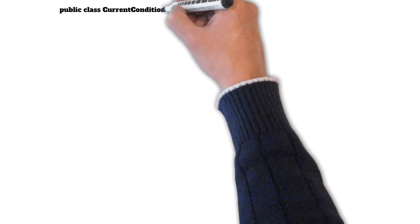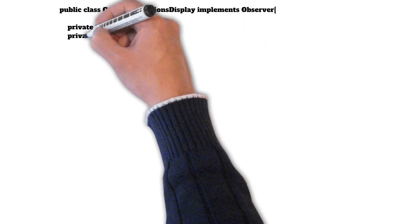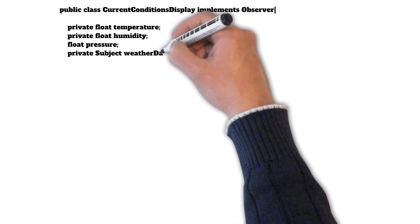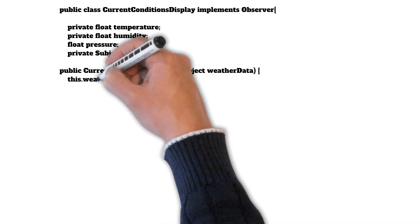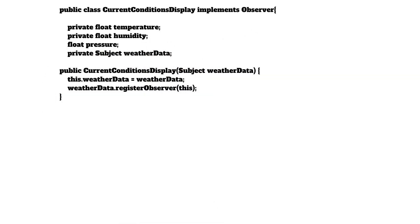Looking at one of the observers — the CurrentConditionDisplay — it has temperature, humidity, and pressure properties, and it also holds a reference to the subject object. Whenever we create an object of CurrentConditionDisplay, we pass the subject object in the constructor. The subject reference is initialized, and then we register our current object to the subject by calling the registerObserver method, adding it into the list of observers.